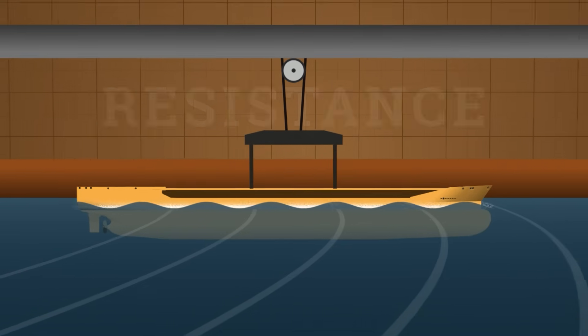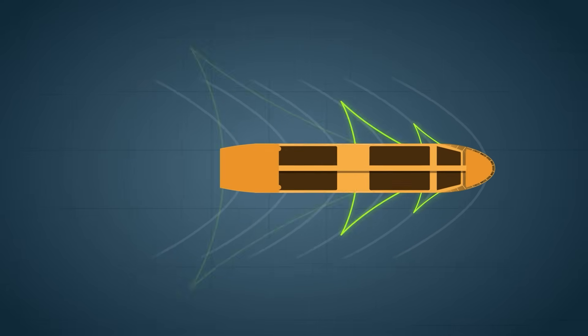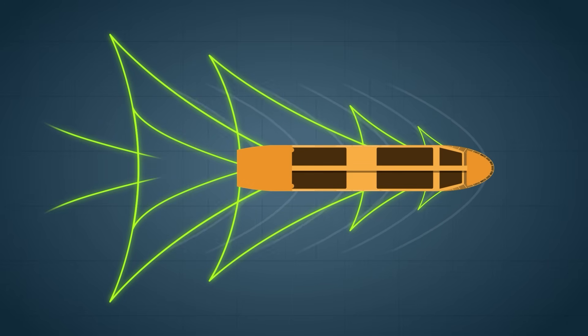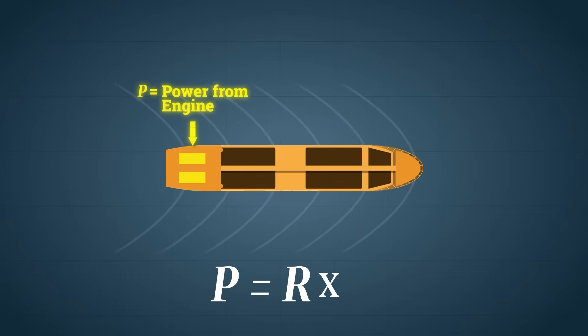Resistance. Engineers tow the model through calm water, measuring the drag at every speed. This tells them how much power the ship will need to hold course, because resistance force is measured directly, and effective power is calculated as P equals R times V, where R is resistance and V is velocity.